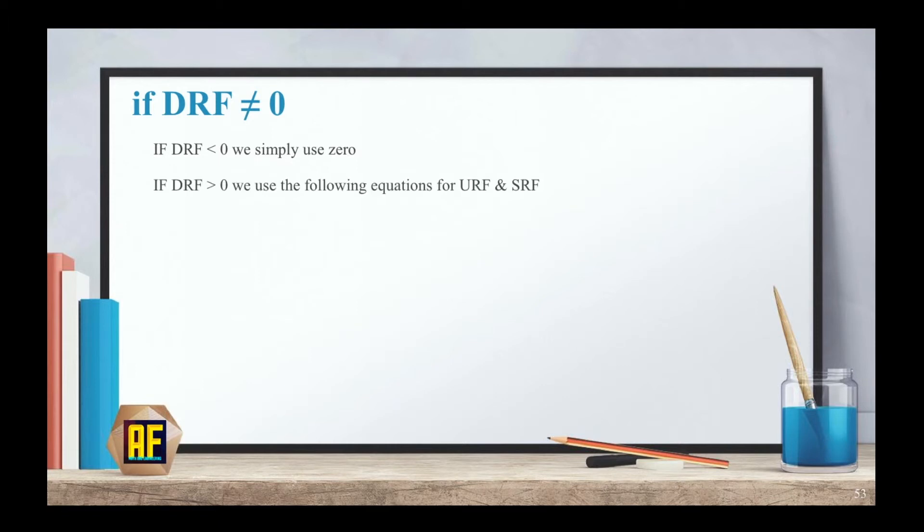But if DRF is bigger than zero, we use the following equations. URF stays exactly the same equation. Nothing changes. However, for SRF, we use this equation. The maximum, the bigger number from LF minus LS or EF minus ES minus duration minus DRF.